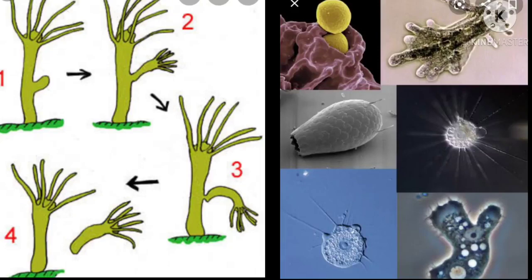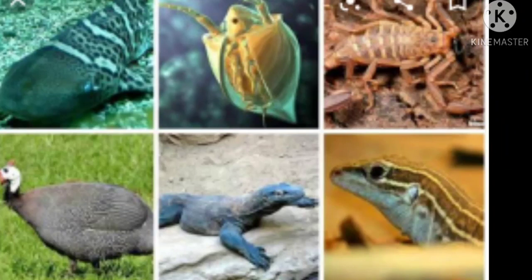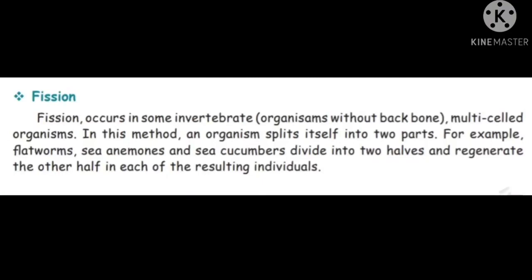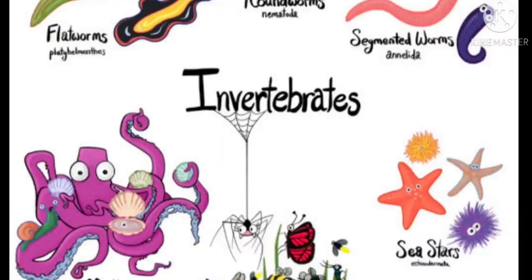First one: fission. Fission occurs in some invertebrate organisms — that is, organisms without a backbone — which are multi-celled organisms. In this method, an organism splits itself into two parts. For example, flatworms, sea anemones, and sea cucumbers divide into two halves and regenerate the other half in each of the resulting individuals.